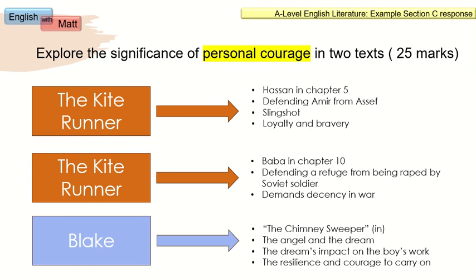As I have done in many videos on this channel when looking at exemplar responses, I begin with a plan and highlight the most important part of the question — the words 'personal courage'. In this response, I'm going to plan to write three paragraphs. Three is a good number if you want to spend enough time thinking as you're writing rather than being rushed. Two paragraphs about the Kite Runner — one about Hassan in Chapter 5 and one about Baba in Chapter 10 — and a final paragraph about The Chimney Sweeper from Innocence. That hits the Mark Scheme requirement of covering two texts, and you don't need equal treatment of both texts, nor do you need to compare and contrast.